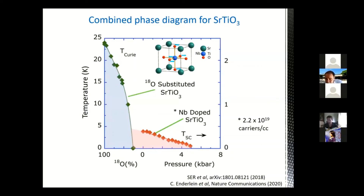Robert Cava asks: is there a documented effect of disorder in this system? In oxygen-reduced strontium titanate — another way to introduce carriers — the reduction is likely very inhomogeneous and highly disordered. This may explain some reports of superconductivity at very low doping levels in oxygen-reduced samples, which are absent in niobium-doped samples. A question about whether niobium-doped samples might be oxygen deficient: the evidence against this is the dome structure — if there were background oxygen vacancies, we would not see the dome disappear at low and high carrier density.